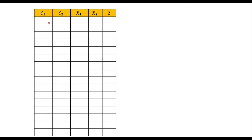The truth table has C1, C2, X1, X2 as inputs and Z as output. Since we have four inputs, that is 2 to the power 4 equals 16, we get 16 different possible input combinations. Let me write all possible inputs.